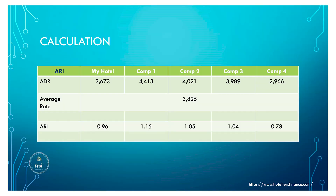In our example, my hotel's average rate is 3,673. Competition one is 4,413, competition two is 4,021, competition three is 3,989, and competition four is 2,966. The average rate across all five hotels is 3,825. Dividing my hotel's rate of 3,673 by the average of 3,825 gives an ARI of 0.96 — showing I'm not very aggressive in rate compared to competition.